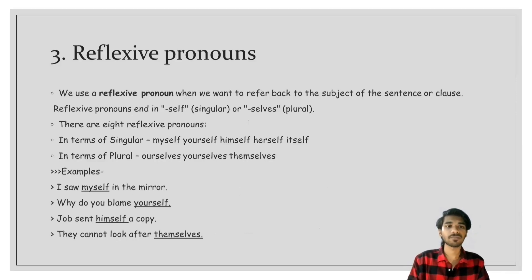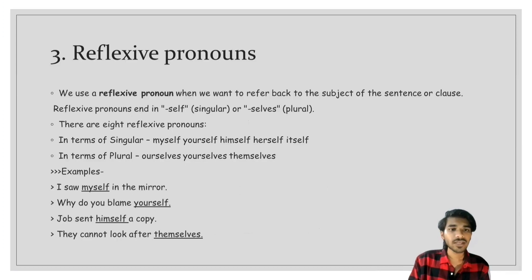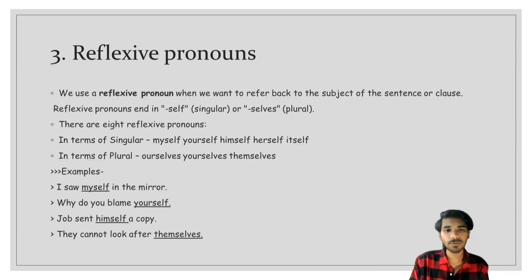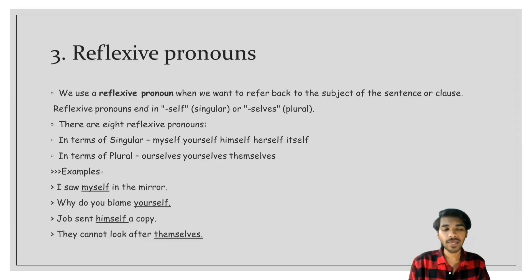Moving on to reflexive pronoun. We use reflexive pronouns when we want to refer back to the subject of a sentence. A reflexive pronoun ends in '-self' when singular and '-selves' when plural. There are eight reflexive pronouns. Singular: myself, yourself, himself, herself, itself. Plural: ourselves, yourselves, themselves. Examples: 'I saw myself in the mirror' — 'myself' is reflexive. 'Why do you blame yourself?' — 'yourself' is reflexive.